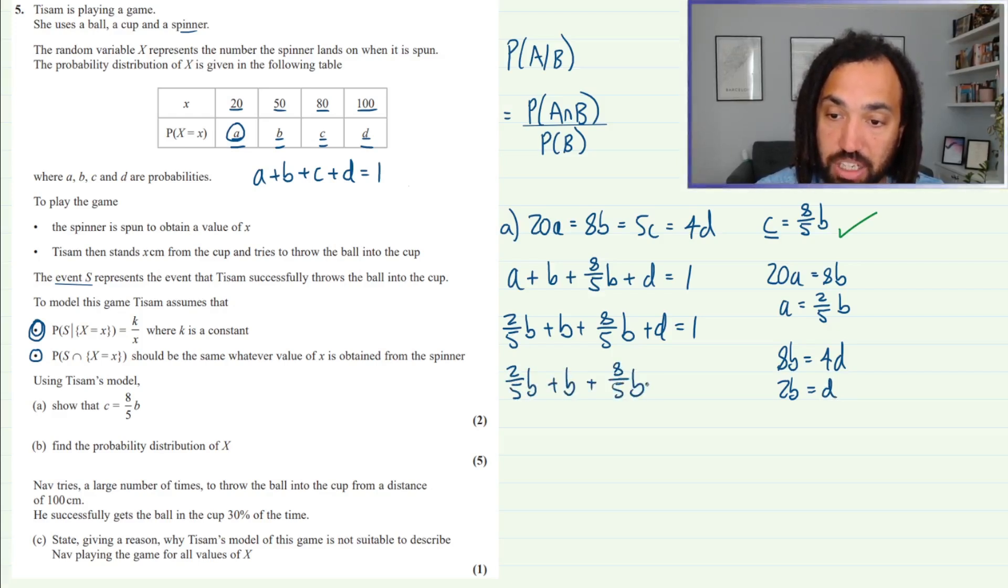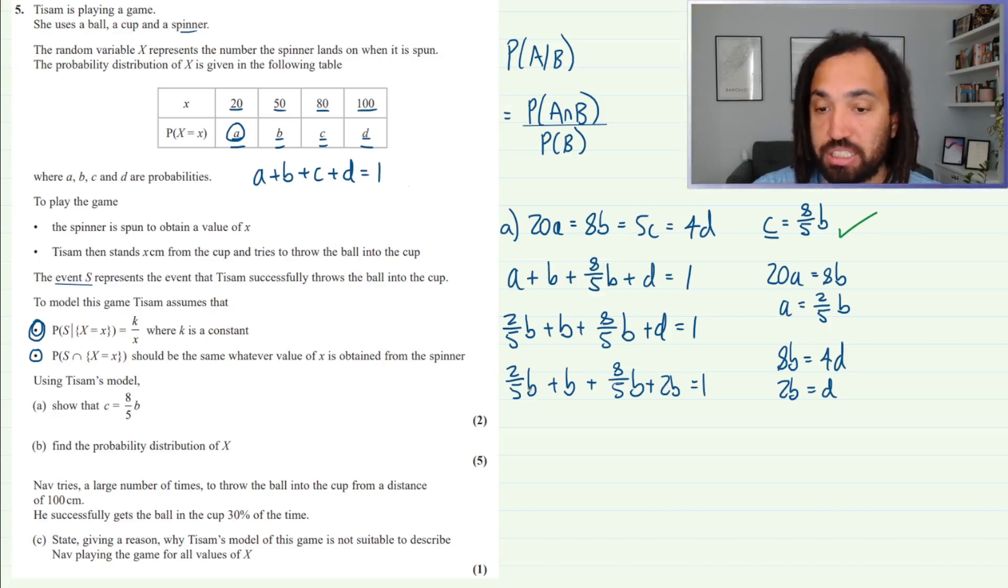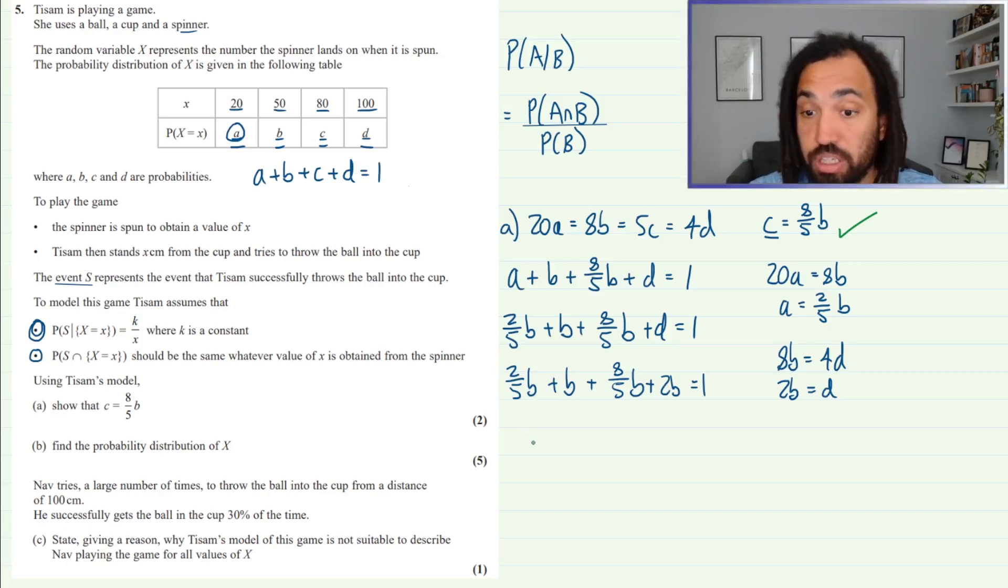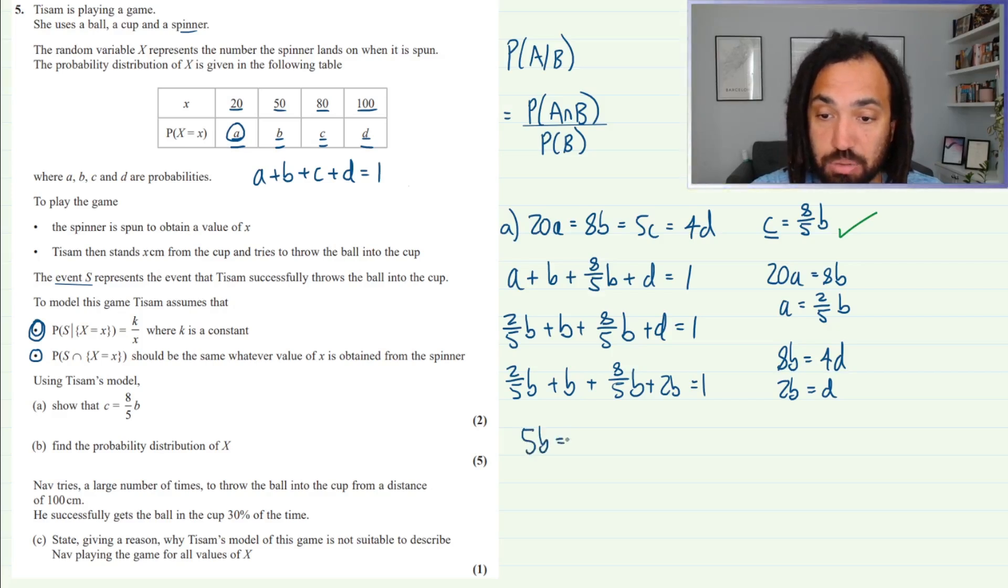And now we've got this equation which is only in terms of B, which we can simplify. We've got 1 and 2 makes 3, and these fractions here make 10 over 5 which is 2, so that's a total of 5B is equal to 1. So we know that now B is equal to 1 fifth.